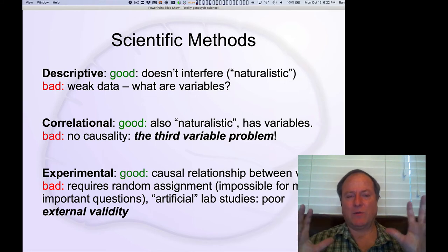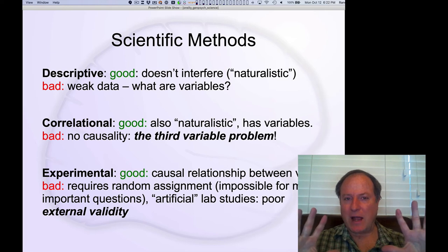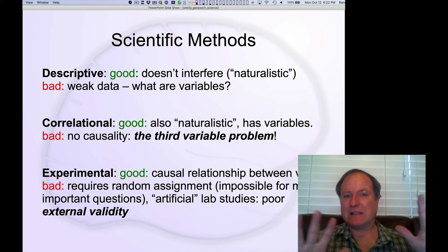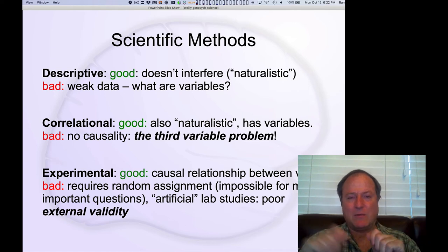That's the only way you can get around all these third variables that might be lurking in the background is just to sort of throw random noise at the problem and completely break any pre-existing associations among these variables. So you just take each person and put them randomly in one group or another, and then you apply some manipulation to one group and not the other.